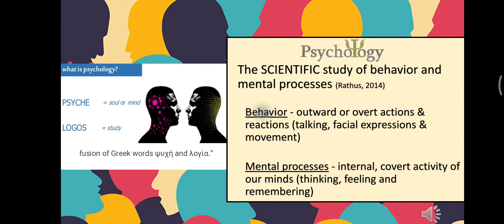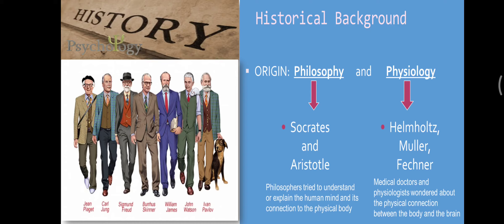For the historical background, psychology originated from two disciplines: philosophy and physiology. In ancient times, philosophers thought about the connection of the mind and body. More modern doctors wondered about the connection of the body and brain. Most early psychologists were medical doctors by profession. Philosophers like Socrates tried to understand the human mind, while physiologists like Muller and Fechner were medical doctors.